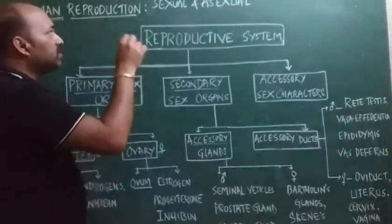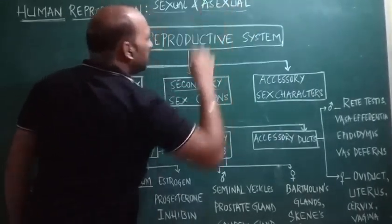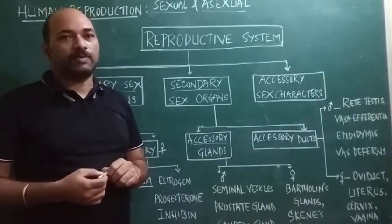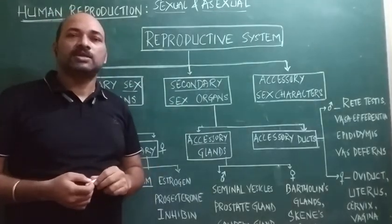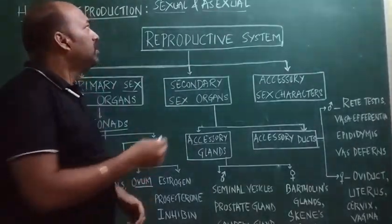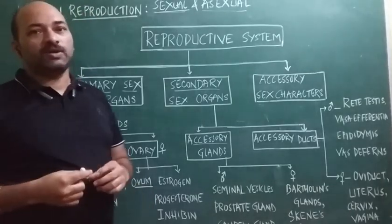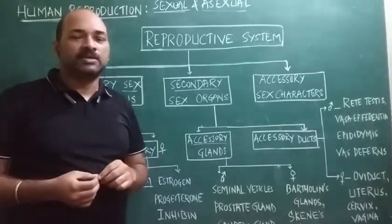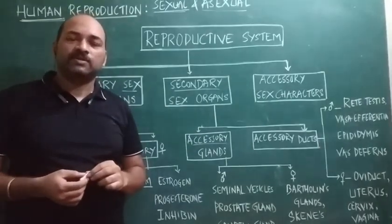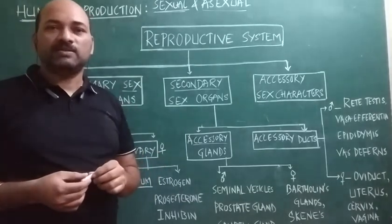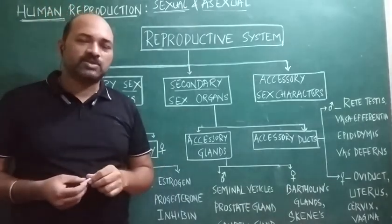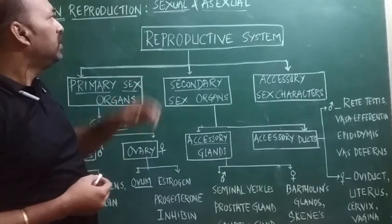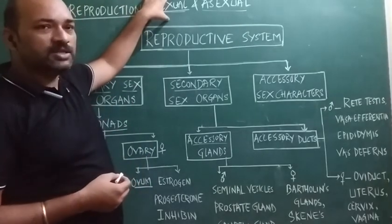Why is it so? What is the difference between sexual and asexual reproduction? Sexual reproduction is commonly said to be a bi-parental process, while asexual reproduction is a uniparental process. In sexual reproduction there is a fusion of the male and female gametes, which results in the shuffling of chromosomes, thereby reshuffling of the genes, resulting in the formation of variation. Variation results in speciation, and speciation results in evolution — that is the reason nature favors sexual reproduction.